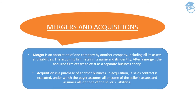Merger is something wherein two companies merge together — let's say Company A merged with Company B and they formed Company AB. That would be an example of merger. But in acquisition, Company A acquires Company B. Do you think they will change their name to AB Company? No. All the things relating to Company B — its assets, its liabilities, everything — are now acquired by Company A. Company A is certainly not going to change its name.